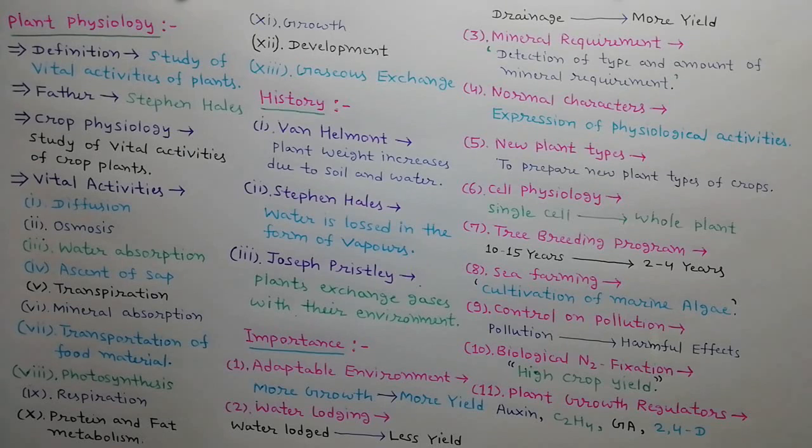Plant growth regulators: Auxin is used for rooting and parthenocarpy. Ethylene is used for fruit ripening. Gibberellins are used for parthenocarpy. And 2,4-D is used as herbicide.